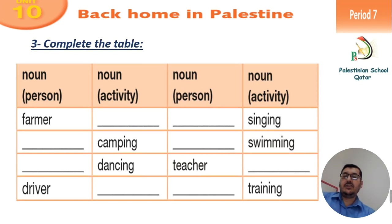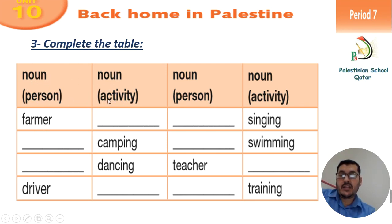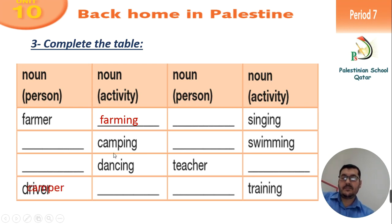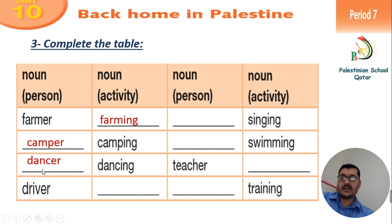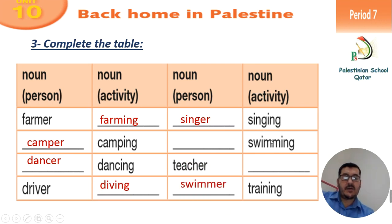Exercise number three — complete the table. In this part we have a noun person and a noun activity. When we have a noun person it ends with -ER, and when we change it to noun activity we add -ING. So farmer becomes farming. Now here we have noun activity: camping — what is the noun person? Camper. Dancing — dancer. Driver — noun activity: driving. Singing — noun person: singer. Swimming — noun person: swimmer.